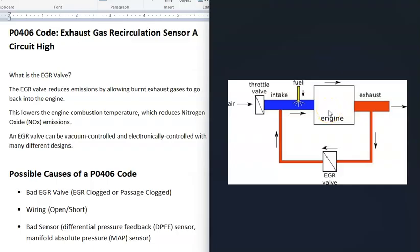Some exhaust gas goes into the combustion chambers, which lowers the engine combustion temperature and reduces nitrogen oxide emissions. When you get a P0406 code, the computer is seeing a problem with the EGR valve, mainly in the circuit going to it, so it needs to be troubleshot.